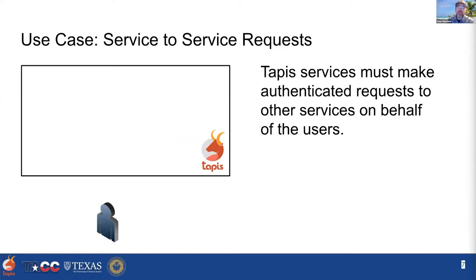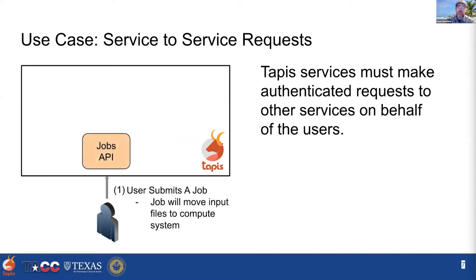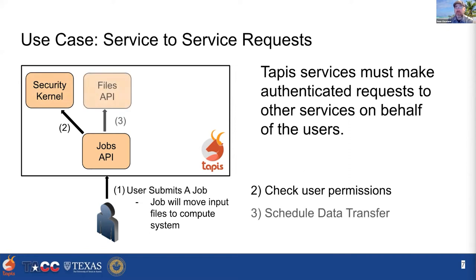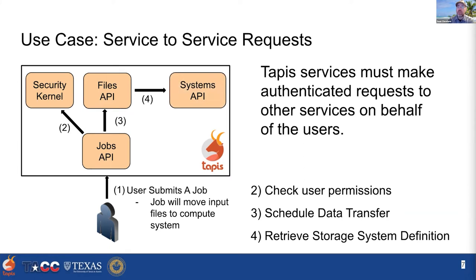One major use case is service-to-service requests, where TAPIS makes authenticated requests between different services on behalf of users. For example, when a user submits a computational job to the jobs API, jobs talks to a security kernel service to check permissions, then talks to the files API to initiate a data transfer to a storage system. Files then talks to the systems API to get the system definition — how to connect, where it is, what protocol to use. That's the service-to-service request use case.